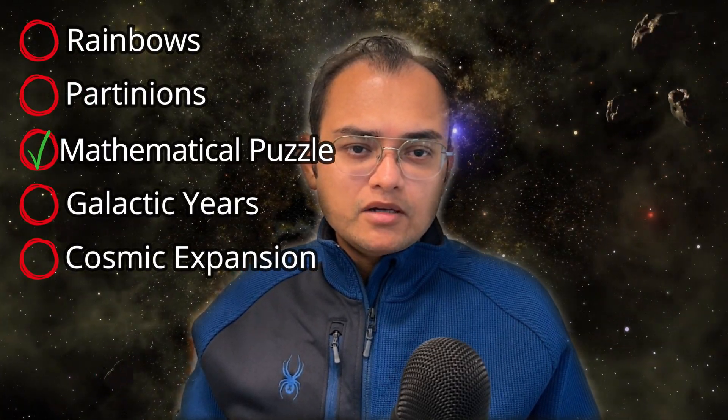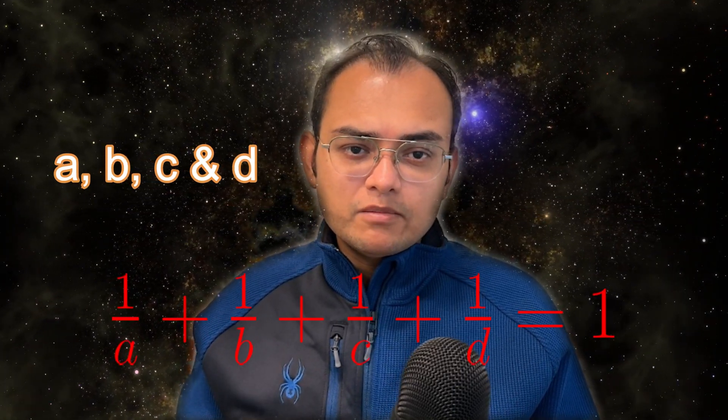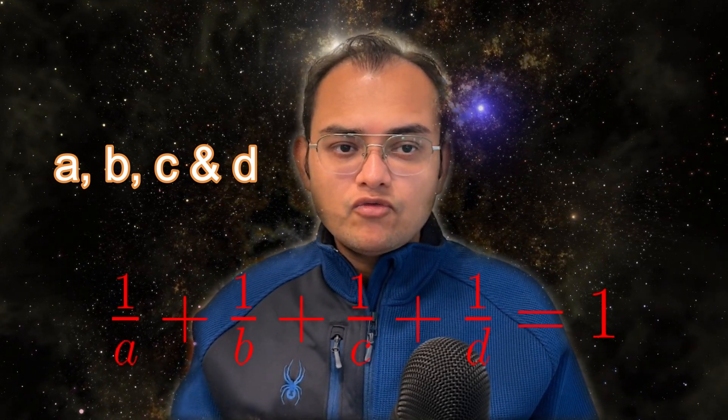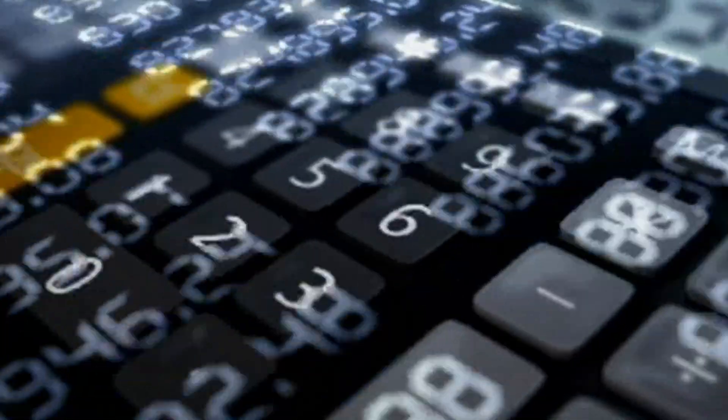The third example is a mathematical puzzle. Suppose you want to find 4 positive integers a, b, c and d such that 1/a plus 1/b plus 1/c plus 1/d equals 1. This equation has infinitely many solutions if you allow some of the numbers to be equal, but only a few if you require them to be different. In fact, the largest number that can appear in such a solution is 42.